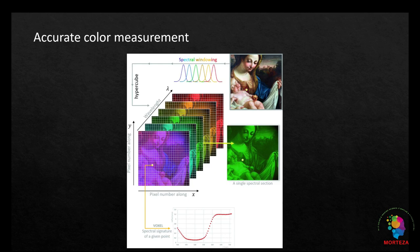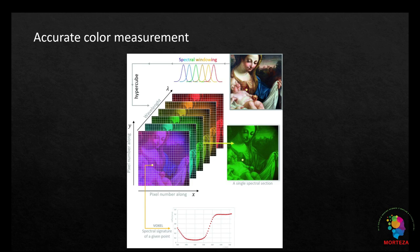Third is accurate color measurement. Hyperspectral imaging enables accurate measurement and characterization of colors based on their spectral properties. This level of precision is very valuable in industries such as textiles, cosmetics, and automotive where color consistency and accuracy are critical for product quality and branding.